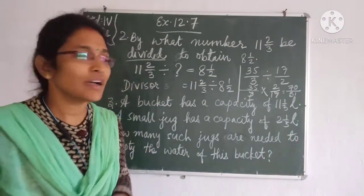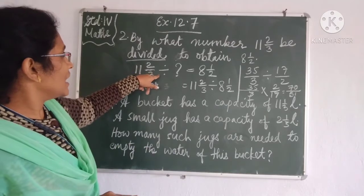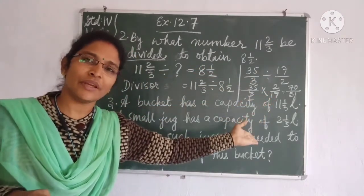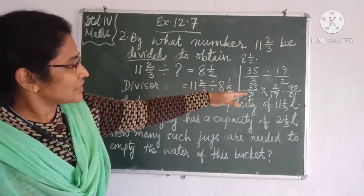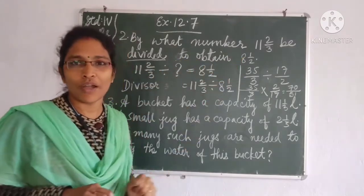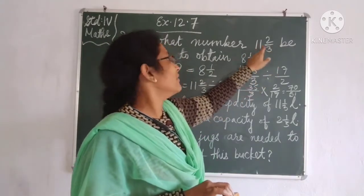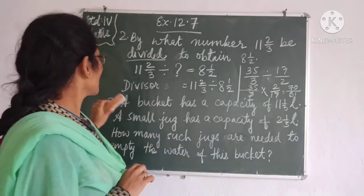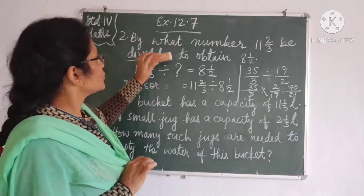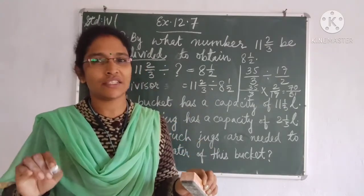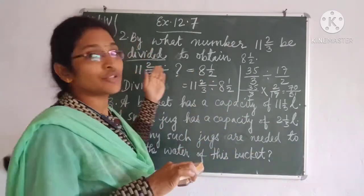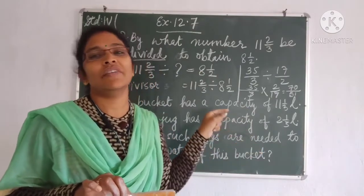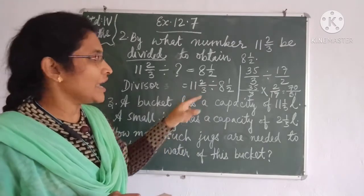This will be the answer. We write the answer statement: 11 and 2/3 should be divided by 70/51 to obtain 8 and 1/2. We can also state it formally: dividend = 11 and 2/3, quotient = 8 and 1/2, therefore divisor = 11 and 2/3 divided by 8 and 1/2, which equals 70/51.